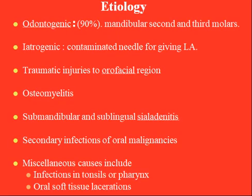The etiology of Ludwig Angina is most commonly odontogenic, most commonly involving the mandibular second and third molars. Iatrogenic causes include contaminated needle use during inferior alveolar nerve block. Other causes include traumatic injury to the orofacial region, osteomyelitis, submandibular and sublingual cellulitis, secondary infection of oral malignancies, and miscellaneous causes such as infection in the tonsils or pharynx and oral soft tissue laceration.